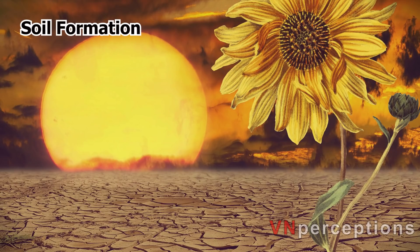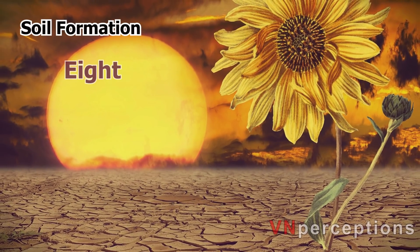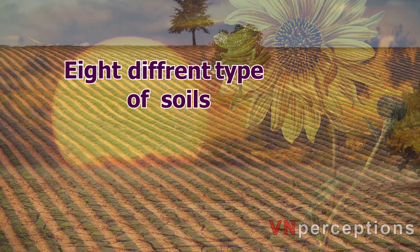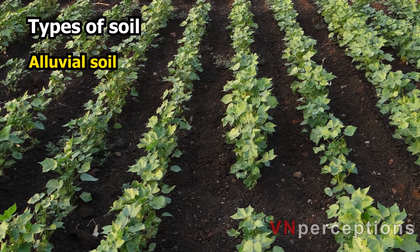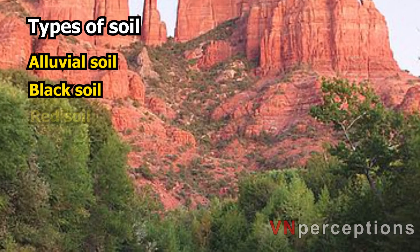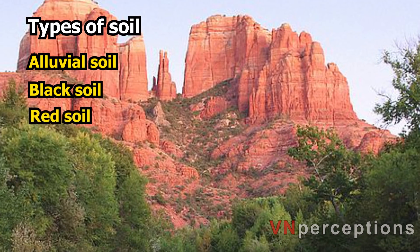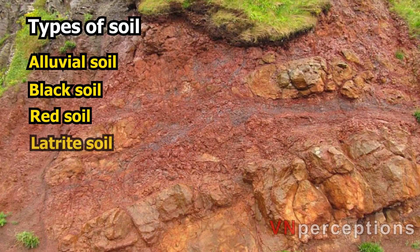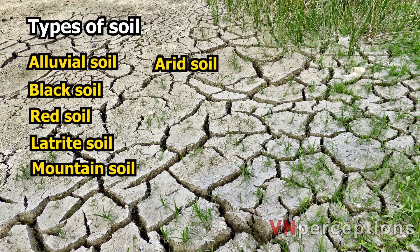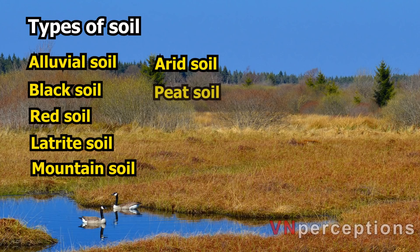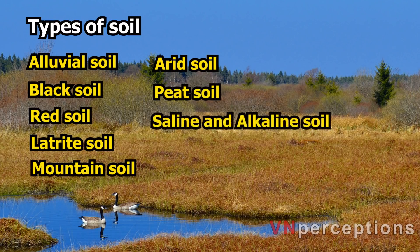In this video, we are going to learn about eight different types of soils: alluvial soil, black soil, red soil, laterite soil, mountain soil, arid soil, peat soil, and saline and alkaline soil.